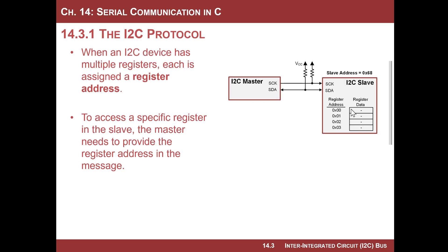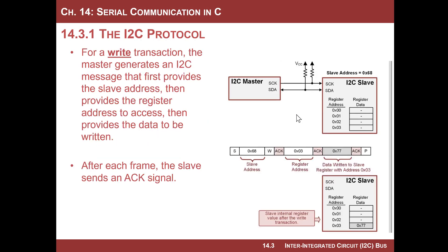Now let's look at what it looks like when you have multiple registers. You get an I²C device, look at its data sheet, and find its storage elements. For this example, let's say it's a four-register device with addresses 00, 01, 02, and 03. If you want to access a specific register, the master needs to tell the slave which register address. It needs to send more information in the message than just a read/write and data — specifically, the register address comes first.